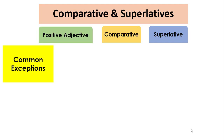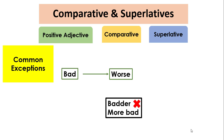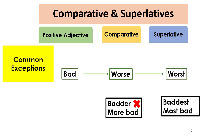Of course, there are always exceptions in English. There are two common exceptions for you. First, for the word 'bad': the comparative is 'worse' — we can't say 'badder' or 'more bad', that is not correct. Similarly, for its superlative, we write 'worst' — we can't say 'baddest' or 'most bad'. These are wrong.